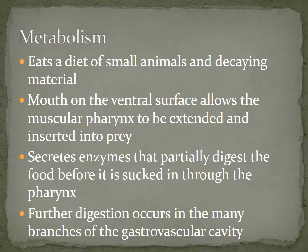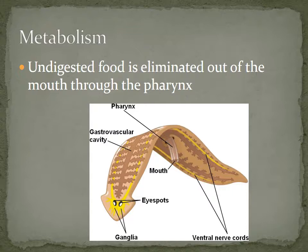The way that flatworms eat: first, they eat small animals and decaying materials. They have a mouth on the ventral surface attached to a muscular pharynx. That pharynx can push out and act as a tube, extending into the prey to secrete enzymes, partially digest the food, and suck it in through the mouth and down the pharynx. Once it travels down the pharynx, it goes to the gastrovascular cavity. Undigested food and waste are eliminated back out through the mouth.